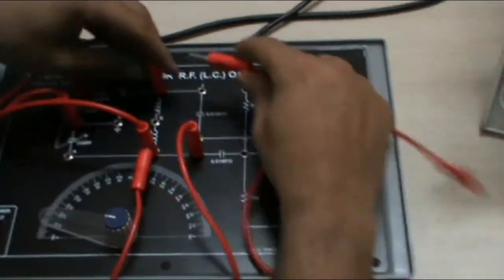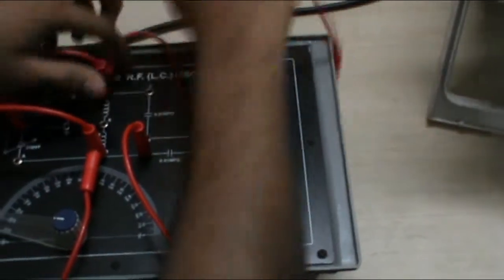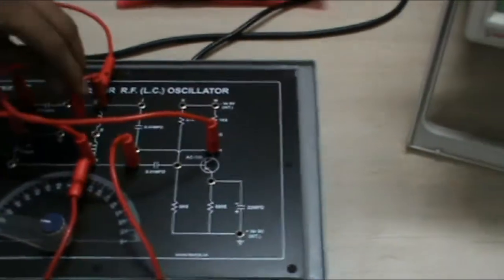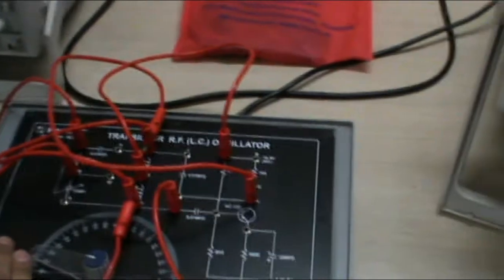Now, F to H. And E to K. These are the connections for the Hartley Oscillator.